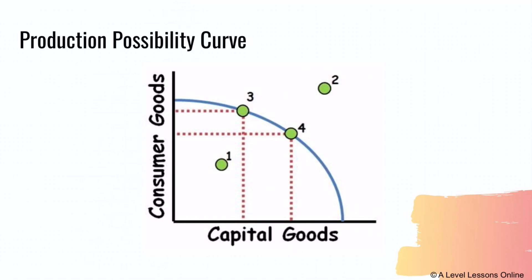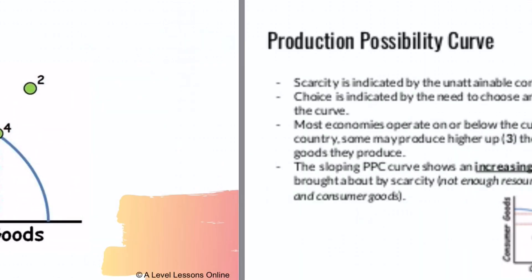When an economy produces at point three, it produces more consumer goods than capital goods, so the opportunity cost is the capital goods it has to forgo. At point four, it produces more capital goods than consumer goods, so the opportunity cost is the consumer goods foregone. There can never be a perfect balance because of the issue of scarcity — there will always be one that is produced more than the other.